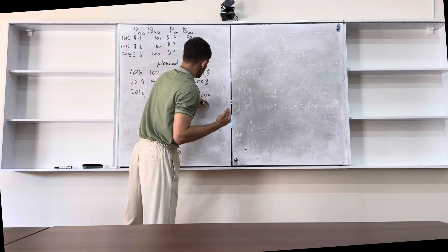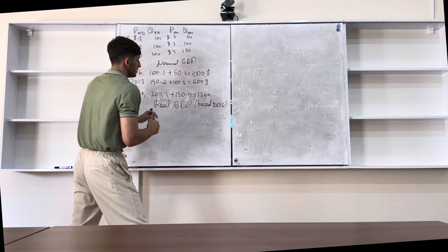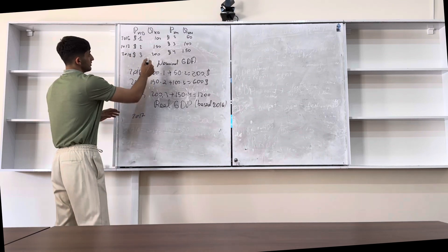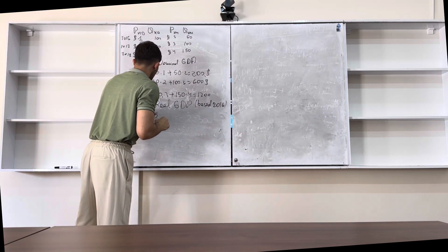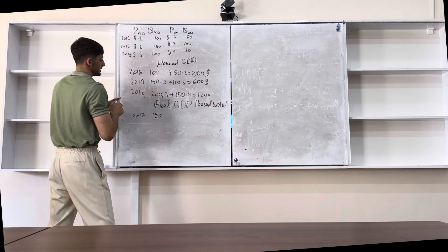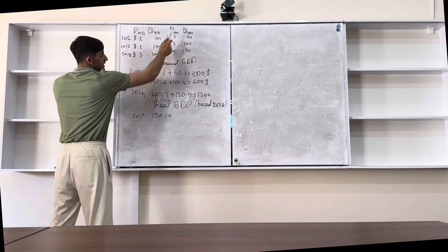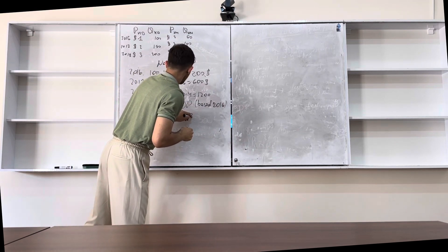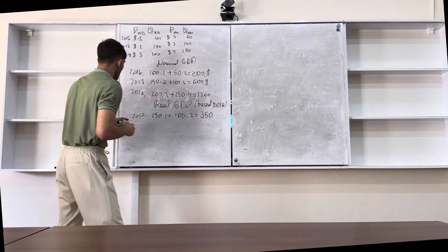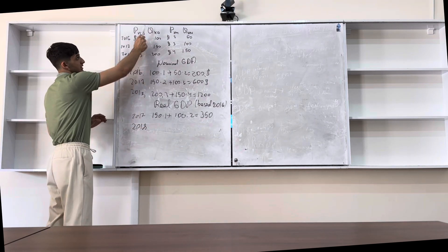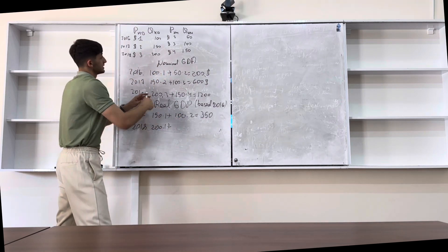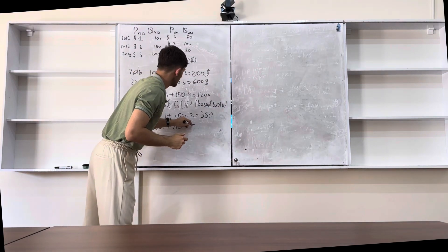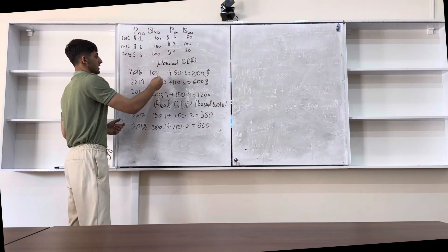Now for real GDP, we value production at constant prices using a base year — in this case, 2016. The first year is the same. For 2017: 150 hot dogs times $1.00 — not $2.00 — plus 100 hamburgers times $2.00 — not $3.00 — because we use 2016 prices. This equals $350. And for 2018: 200 hot dogs times $1.00 plus 150 hamburgers times $2.00, and this equals $500. And this is how we calculate real GDP.